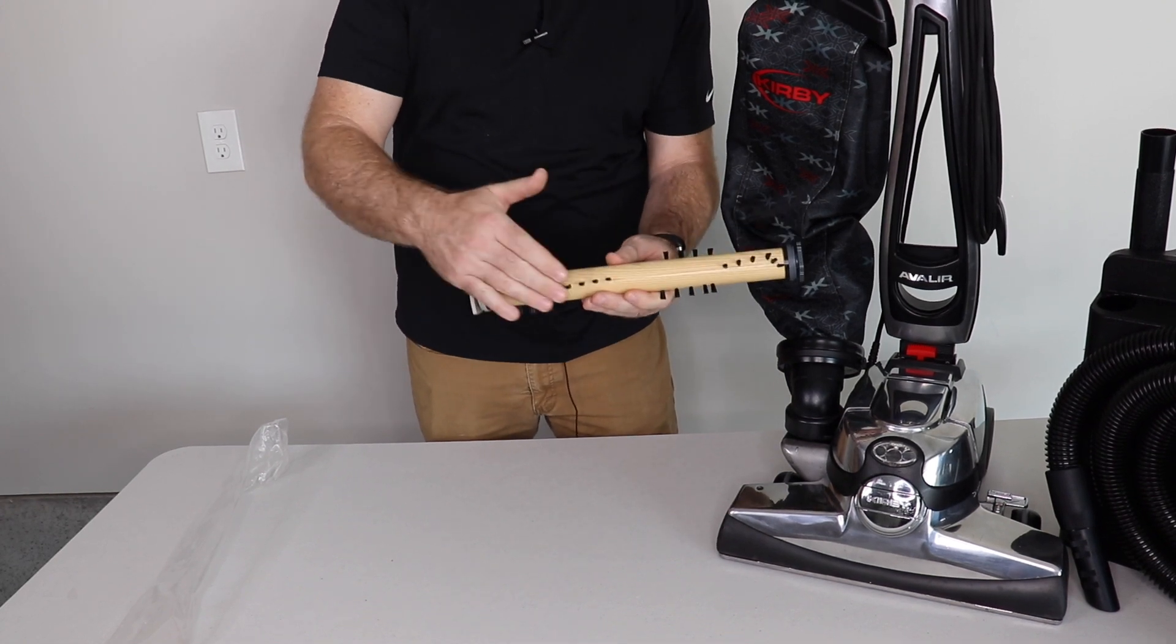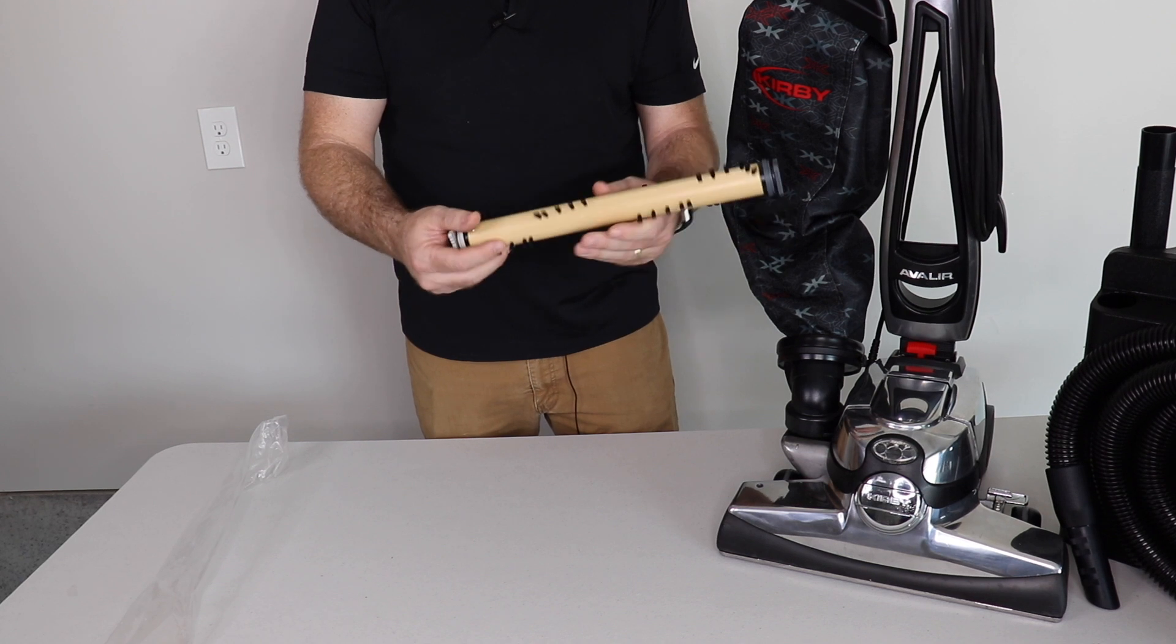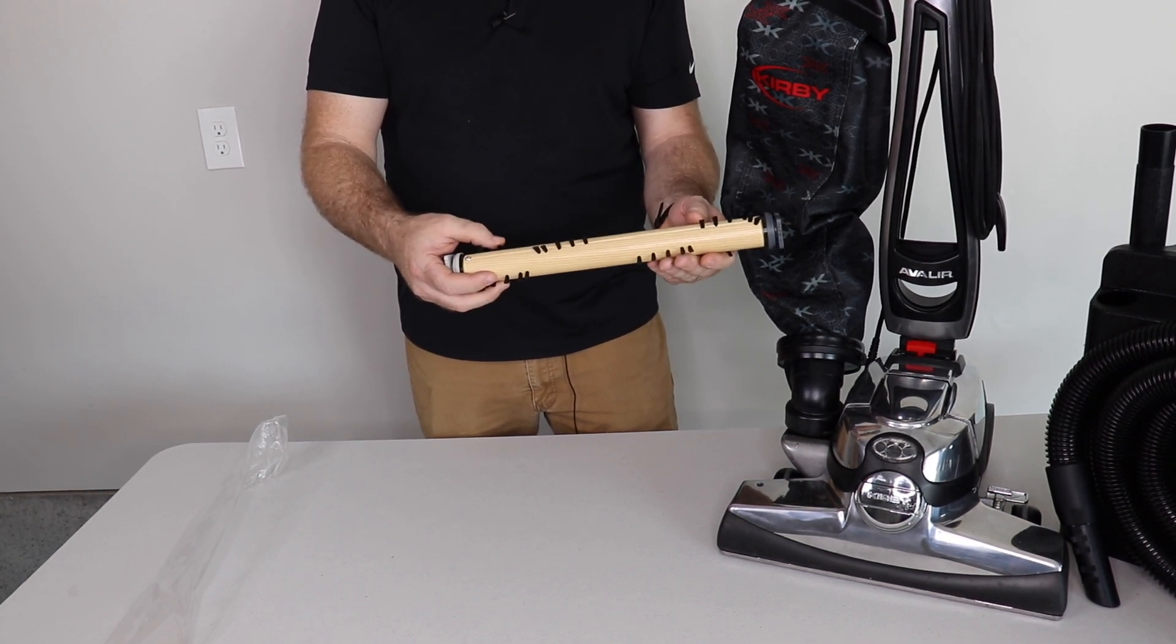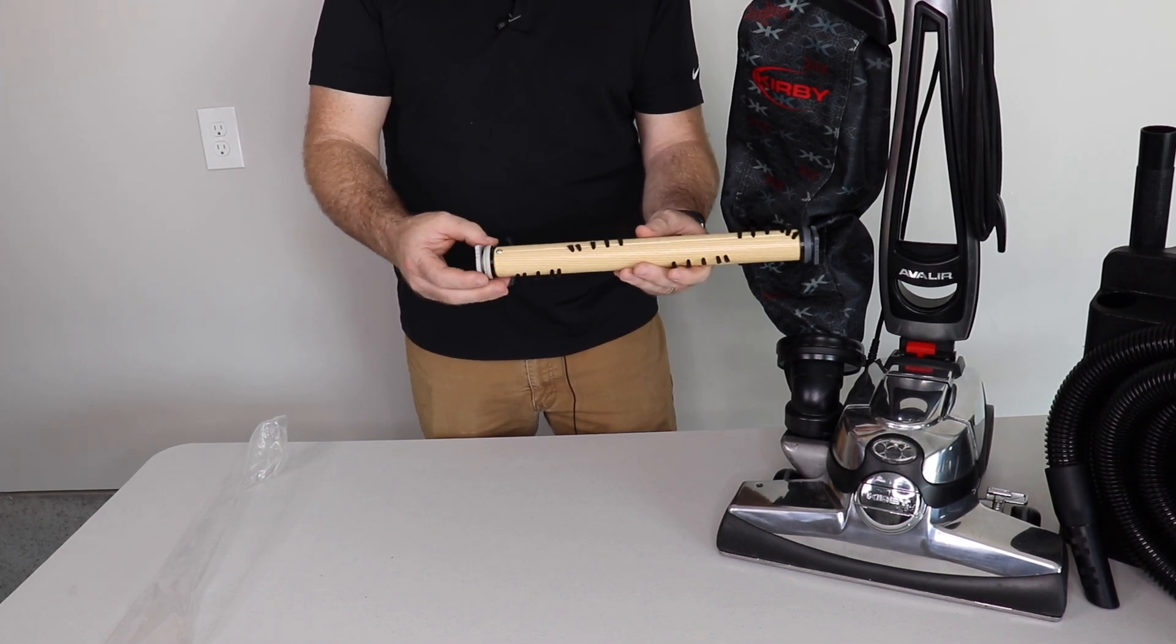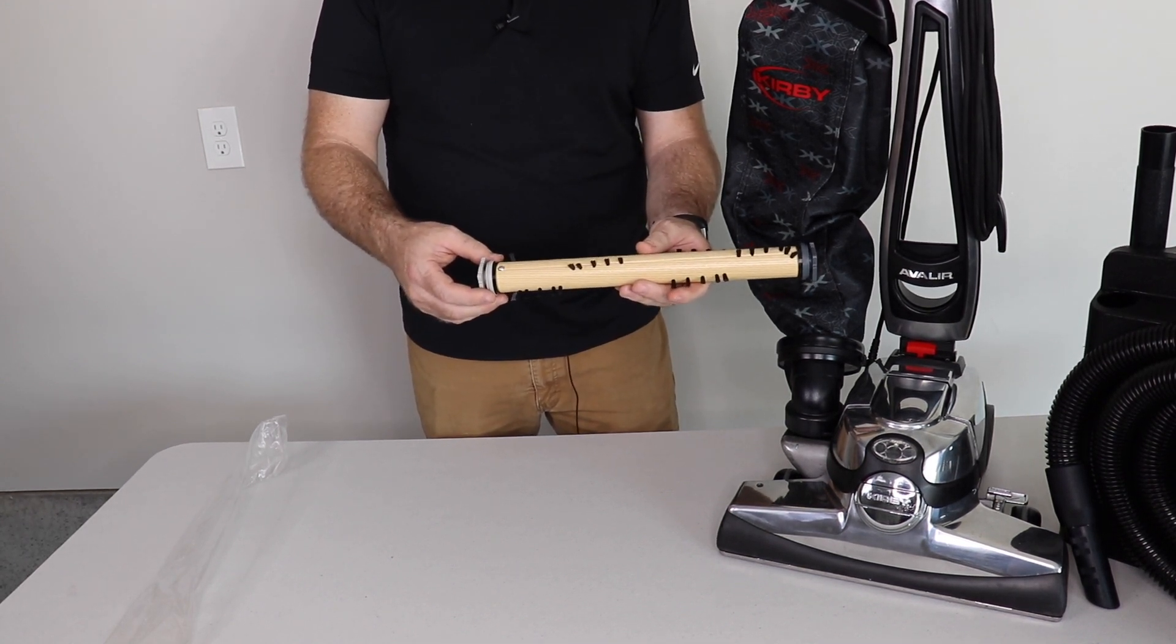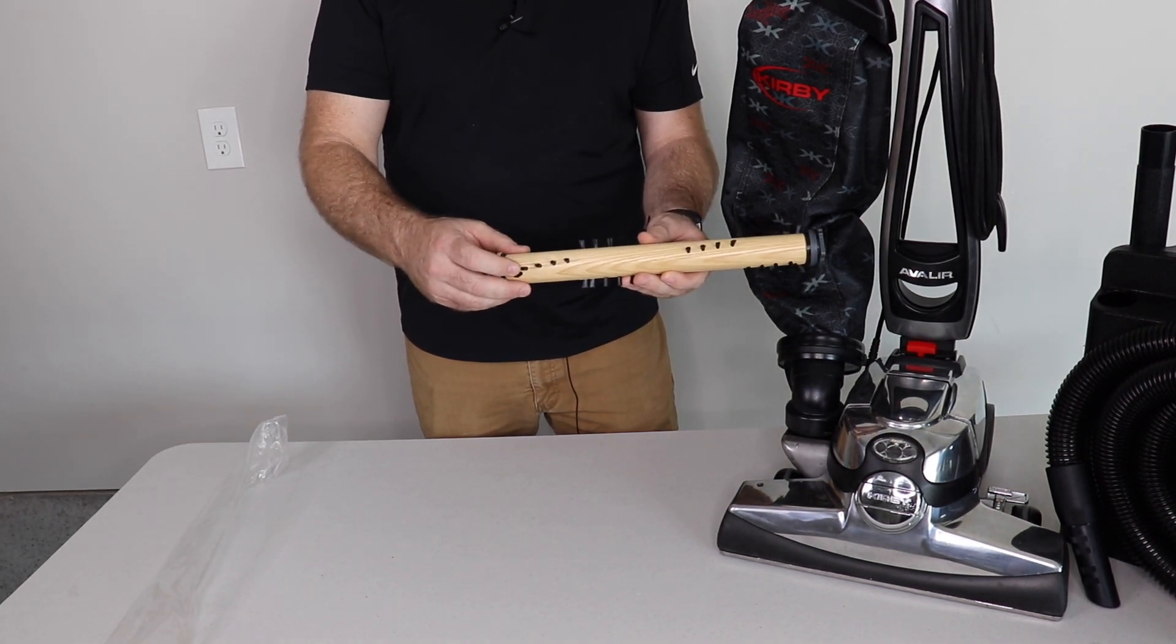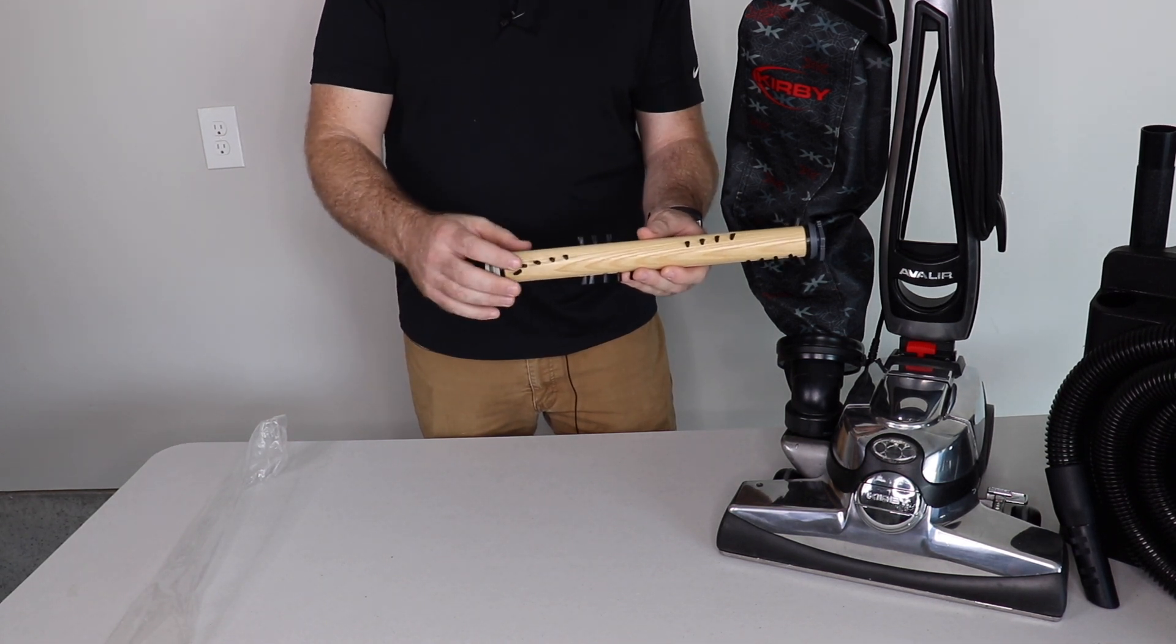And as time goes on what happens is these bristles get worn down and then they're not making as much contact. And brush roll spinning is super important for good deep cleaning. It helps vibrate the carpet and break loose those dirt so it can be sucked into the vacuum cleaner. So we're going to go over right now on how to adjust your settings so that you have the perfect setting. But the idea is make sure that these bristles are making contact with your carpet and if you adjust it closer to the floor it can do that.